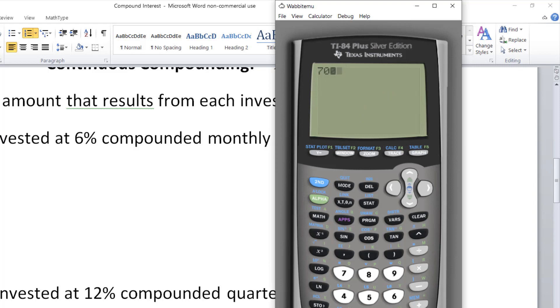So 700, parentheses, 1 plus. 12% again is a decimal, it would be 0.12. Since it's quarterly compounding, N is 4, divide by 4. Close parentheses and then the exponent.